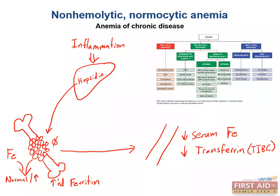So why would the body want to sequester iron in this way? The body's logic is that if some foreign invader or infectious agent is causing inflammation in the first place, you don't want it having access to iron, because these infectious agents are often dependent on the body's iron for themselves. So the body hides all of the iron in an attempt to starve some unknown infectious agent of iron. All of this happens regardless of the root cause of the chronic illness or inflammation, even if it's not infectious — the body doesn't necessarily know what's causing the inflammation, it just knows that there is inflammation and therefore releases hepcidin.